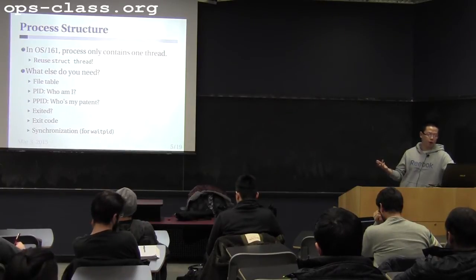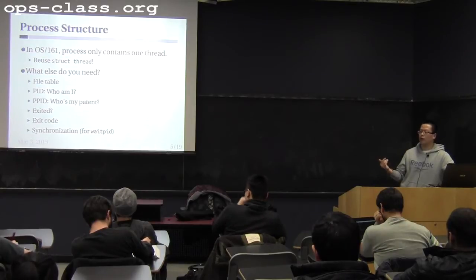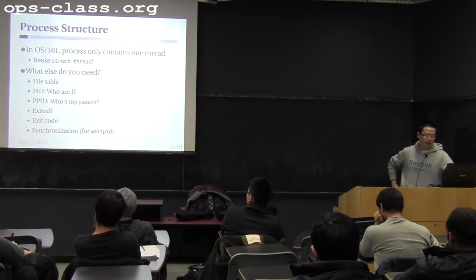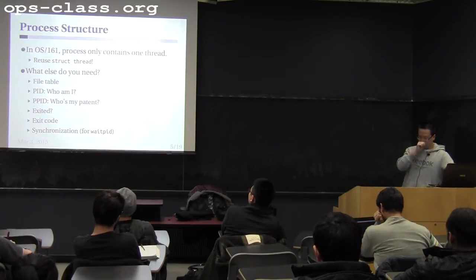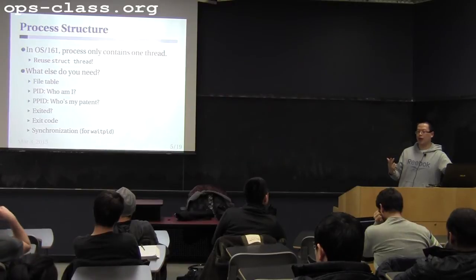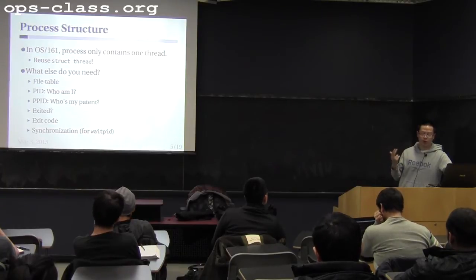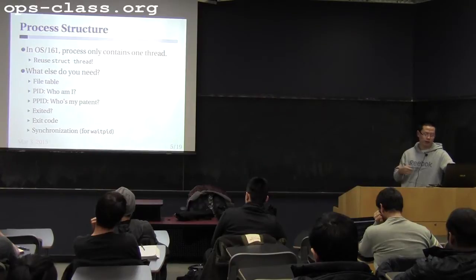For waitpid and exit, you want to include information about whether this process has exited and, if so, what the exit code is — so that if another thread calls waitpid on this thread, you can collect the exit code. Finally, you want synchronization mechanisms in the thread structure. Say process A uses fork to create process B; before B calls exit, process A calls waitpid on B — in that case you should block process A until B exits. So you should have some synchronization primitives to achieve that: lock, CV, or semaphore from assignment 1.